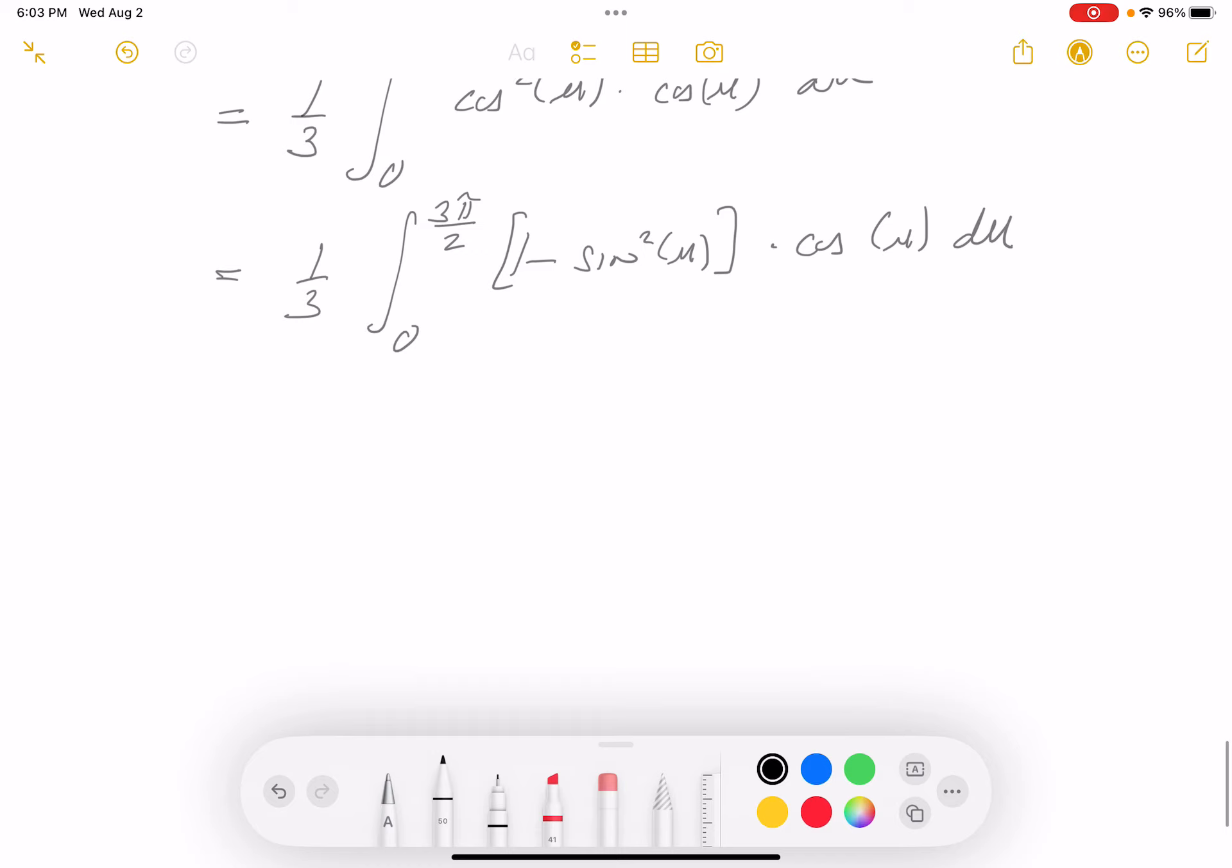I'm going to make another substitution. I got u, I guess I'll go to v now. So I'm going to say v equals sine of u. So dv would be cosine of u du. All right, let's do it.